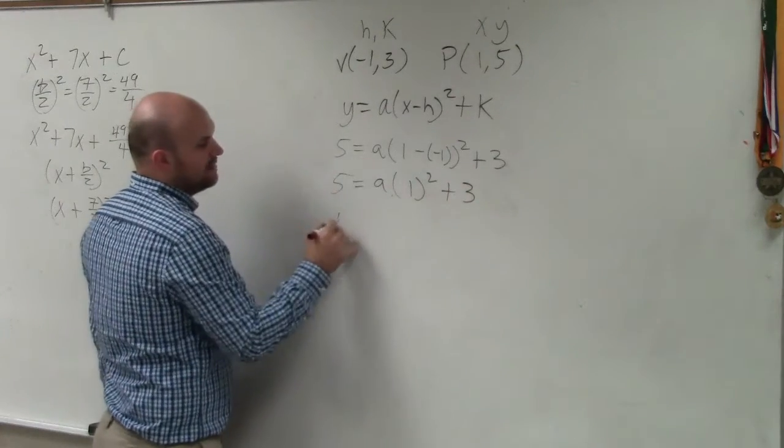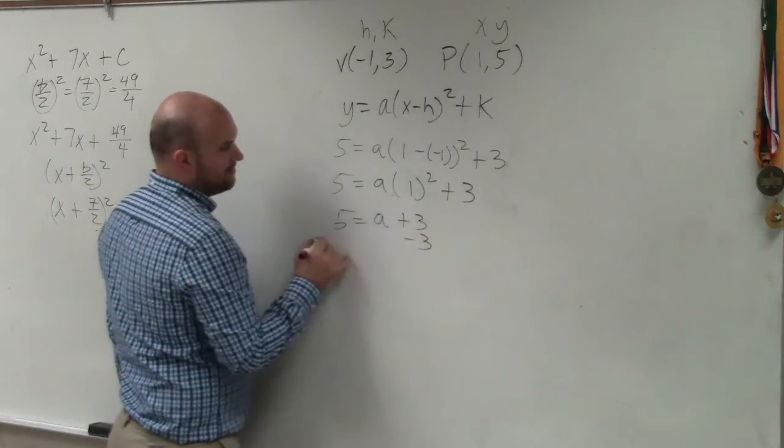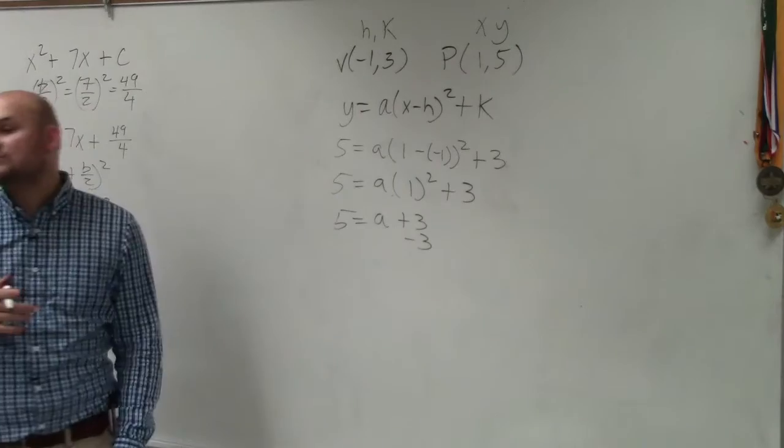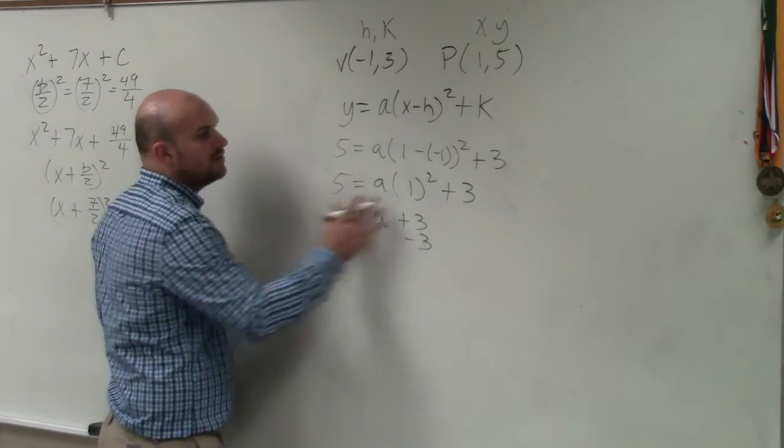1 squared is obviously 1. So I have 5 equals a times 1 is just a plus 3. 1 squared is 1 times 1, so it'd just be 1. Well, it would be 1 plus 1, right? 4. Oh, so it is 2.